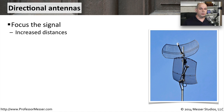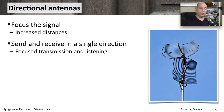In those cases, you'll want to use a directional antenna. As the name implies, this allows you to focus the signal into a very particular area. This also allows you to increase the distance, because you're taking all of that signal that normally was sent omnidirectionally and focusing it all in one particular direction. This means we'll have a very focused signal in one direction for both sending and receiving. Signals off to the side that are not in that direction cannot be sent to or received from very well.